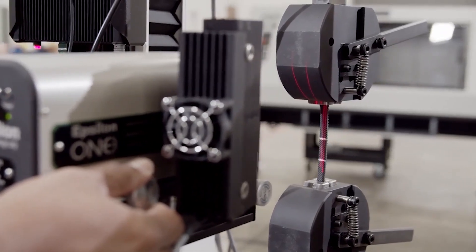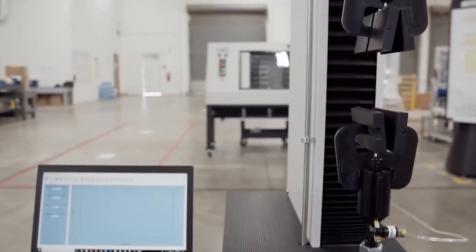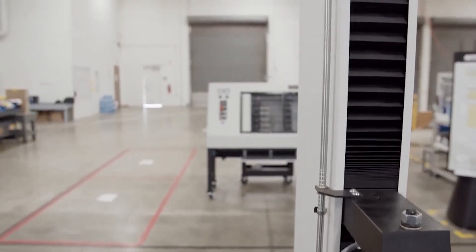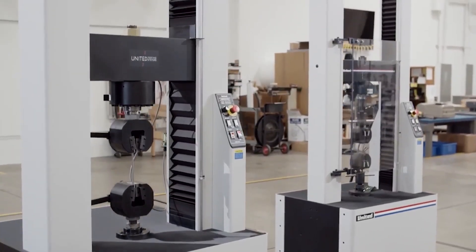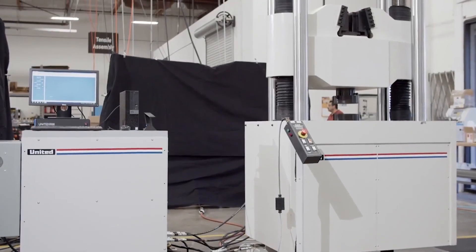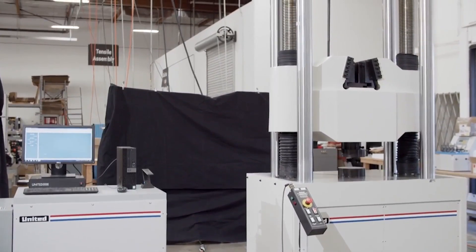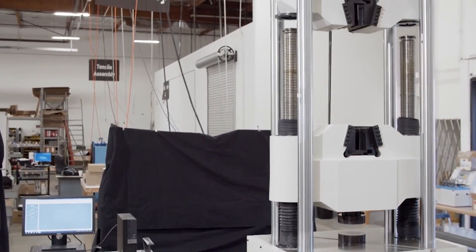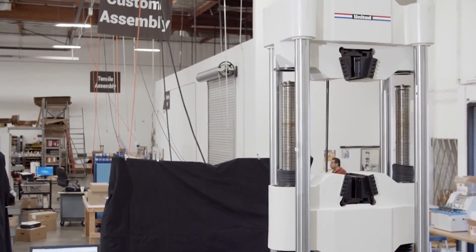Our product line ranges from the software-controlled single-column 2.5 kN test frame all the way up to a 2,000 kN servo-hydraulic system. United's universal test machines can perform quality control or R&D test procedures on a wide variety of materials,